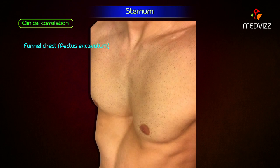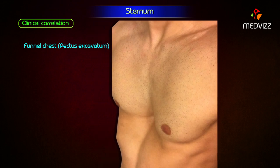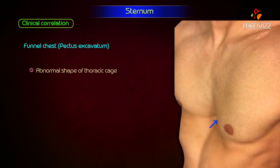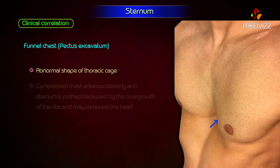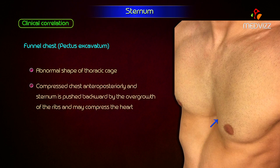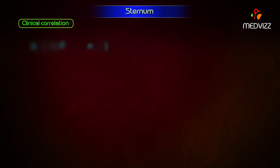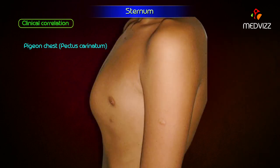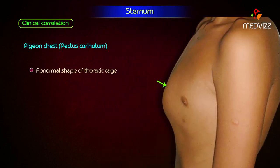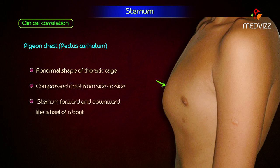Funnel chest or pectus excavatum refers to the abnormal shape of the thoracic cage in which the chest is compressed from side to side, and the sternum projects forwards and downwards like a keel of a boat. Pigeon chest or pectus carinatum also refers to an abnormal shape of the thoracic cage in which the chest is compressed from side to side and the sternum projects forwards and downwards like a keel of a boat.